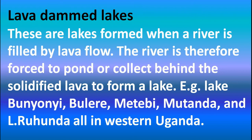Next: lava dammed lakes. These are lakes formed when a river is blocked by lava flow. The river is therefore forced to pond or collect behind the solidified lava to form a lake. Examples include Lake Bunyonyi, Bulera, Mutanda, and Lake Luhunda in western Uganda. What happens here is that during eruption, the river was initially flowing without interruption, but when magma came up and formed lava, it was forced to flow.